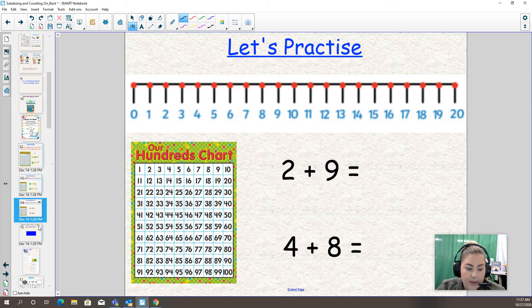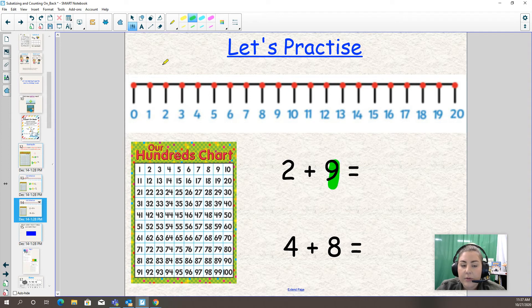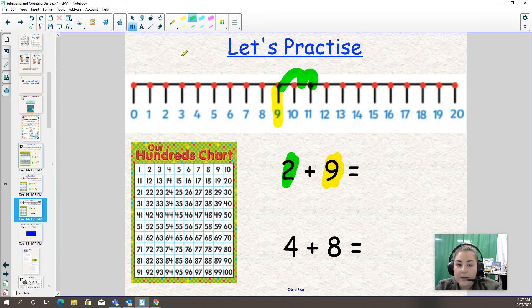Let's do another example: two plus nine. This time I'm going to use the hundreds chart. The bigger number is nine. You got it. So I'm going to find nine on the hundreds chart and count on how many times? Two times. Ready? Nine, ten, eleven. So two plus nine is eleven. Awesome.